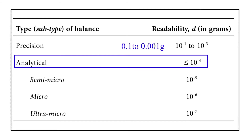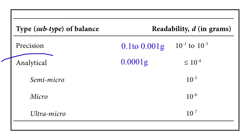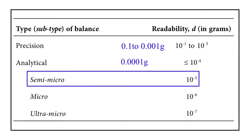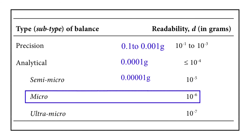Analytical balance: any balance having a readability equal to or less than 10 raise to power minus 4 gram is called an analytical balance. 10 raise to power minus 4 can be written as 0.0001 gram. Analytical balances are further divided into three types. Semi-micro balance: if a balance has a readability of 10 raise to power minus 5 gram, it is called a semi-micro balance, which equals 0.00001 gram.